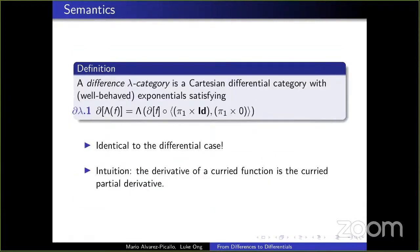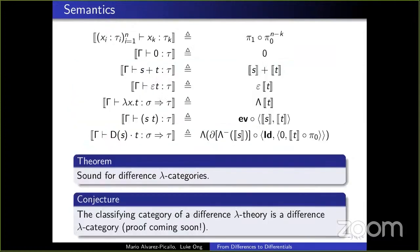The goal was to build a calculus with difference categories as its semantics. There is a sound interpretation of the difference lambda calculus in difference lambda categories — cartesian difference categories that are cartesian closed and where currying is reasonably well-behaved. However, we have not yet proven, though we conjecture, that the classifying category of the difference lambda calculus is a difference lambda category, i.e., that difference categories have the difference lambda calculus as an internal language.